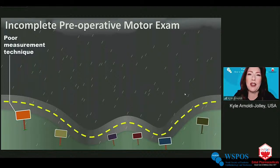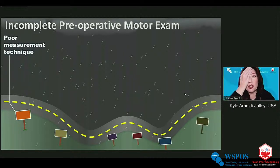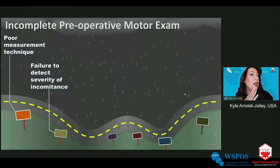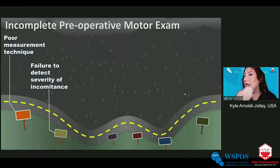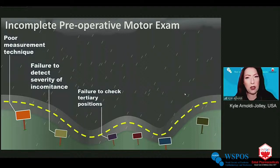Sometimes we underestimate the deviation, usually because of poor measurement. It is the corresponding points in our peripheral field that have the greatest impact on motor fusion, so when measuring strabismus we must ensure we are completely occluding the peripheral field. We may also fail to detect the severity of incomitance — this happens when we don't measure the patient fully into secondary or tertiary positions of gaze. I rotate the patient as far as they can go, double-check they can see the target with each eye, and then begin cover testing.